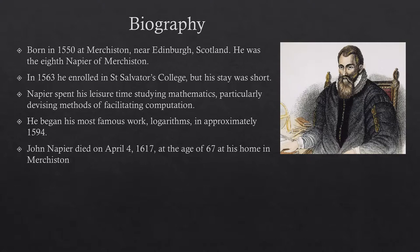John Napier died on April 4th, 1617, at the age of 67, at his home in Murcheston.